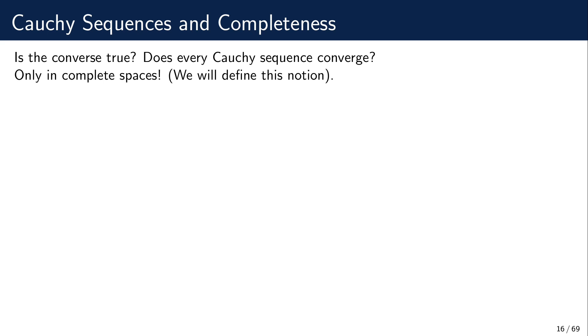Spaces in which every Cauchy sequence converges have a special name. Those spaces are called complete spaces.